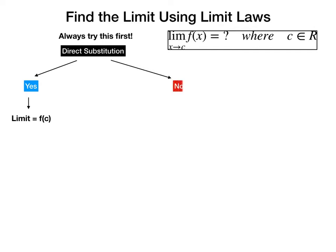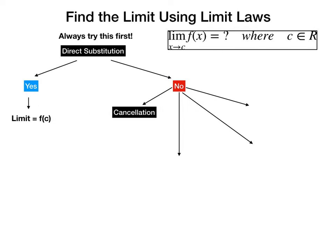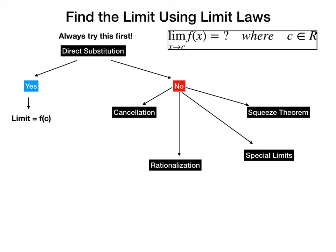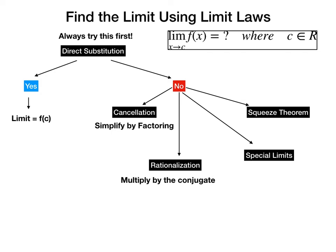If direct substitution doesn't work, you have multiple options. In this video there will be four different techniques: cancellations, squeeze theorem, special limits, or rationalization. Cancellation means you simplify f of x by factoring and then canceling. Rationalization means you multiply the function by the conjugate.